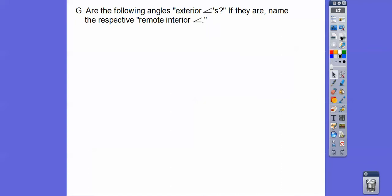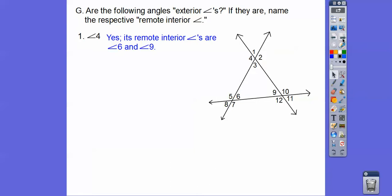Are the following angles exterior angles? And if they are, name their respective remote interior angles. I see 12 different angles there with a triangle and some linear pairs. Is 4 an exterior angle? Does 4 make a straight line with 3? Yeah, it makes this straight line. So yes, it is an exterior angle. The remote interior angles are the other two inside angles, so 6 and 9 are the remote interior angles.